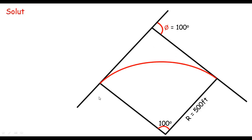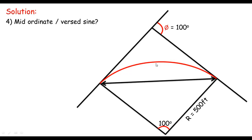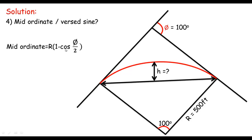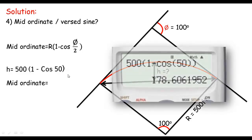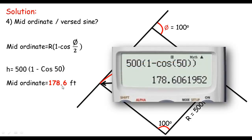Next, let me calculate the mid-ordinate. The mid-ordinate, or versine, is the distance between the center of the chord and the center of the curve. The formula is M = R × (1 − cos(Δ/2)), so H = 500 × (1 − cos(50°)), which equals 178.6 feet.